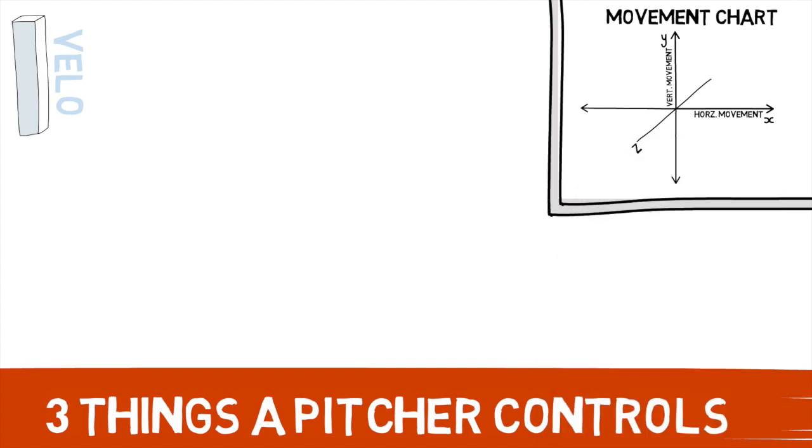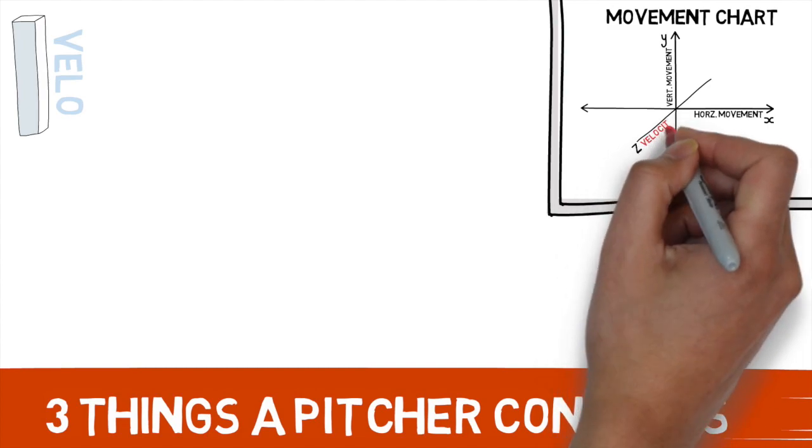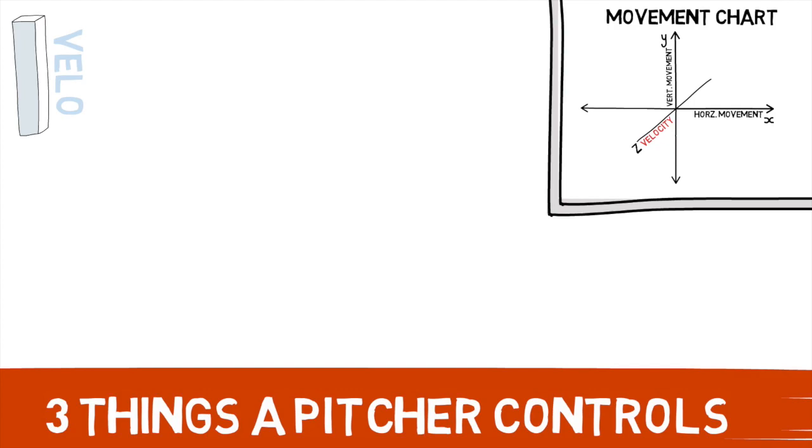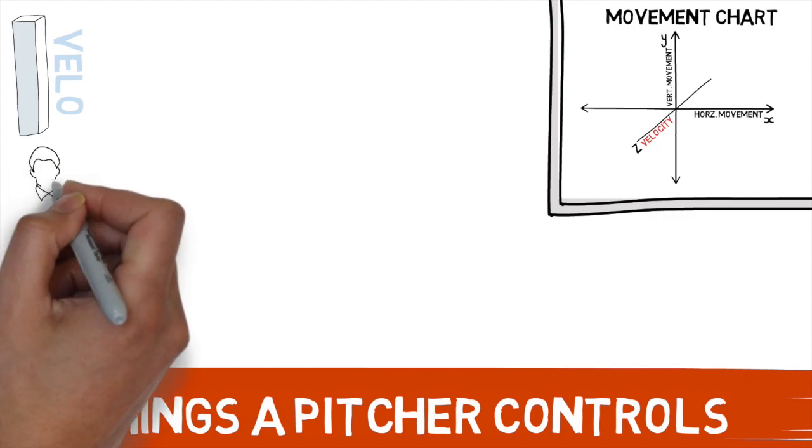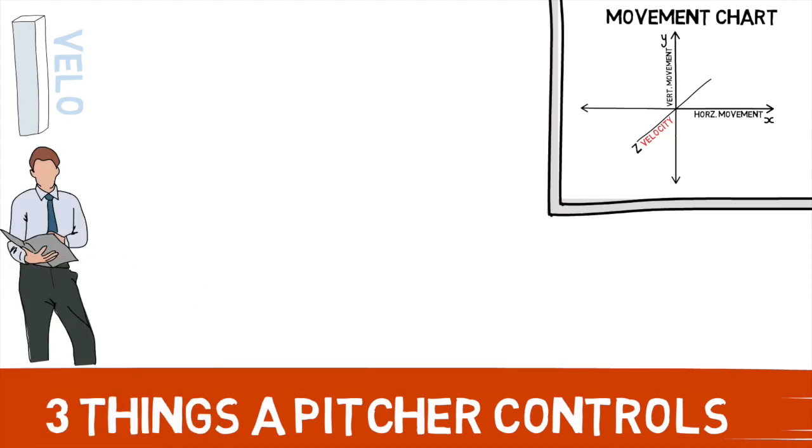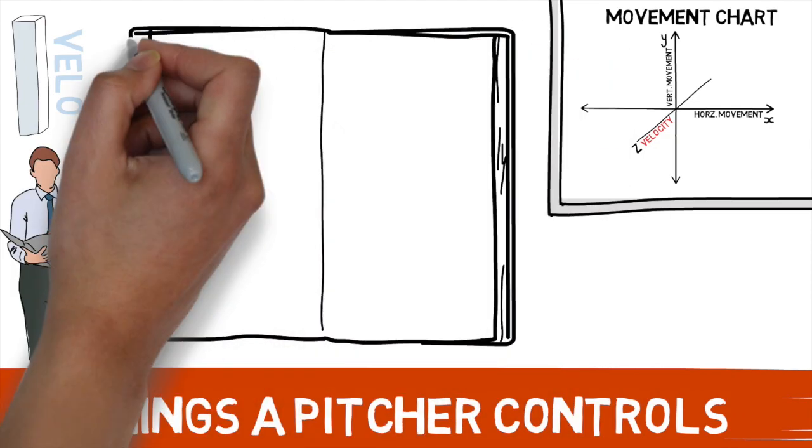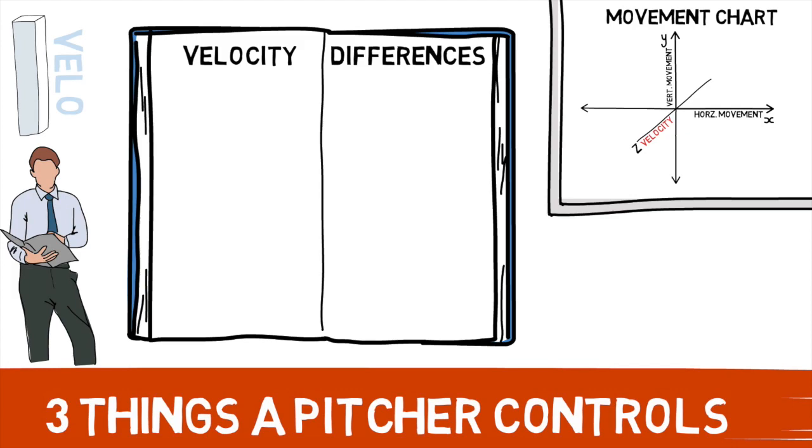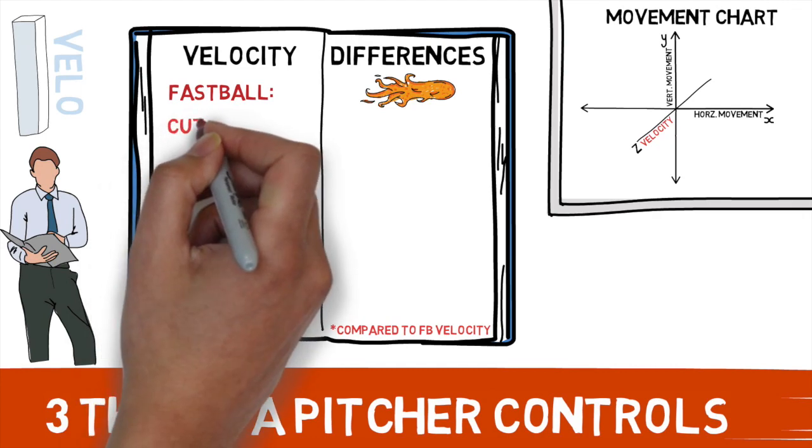That's going to be each pitch's velocities. Just as you want separation between your pitches' vertical and horizontal break, you want the same separation between your pitches' different speeds. Now, if we're going to go by the book here, here's a quick guide on how each pitch should differ from a pitcher's fastball. Your fastball is going to be thrown as hard as you can. That one's pretty obvious.